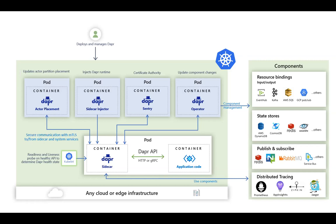To update root and issuer certs, you edit the Kubernetes secret with new certificates and then do a rollout restart of the deployment. These concepts — how it works and how to update the certificates — will be in the concepts section soon. Any questions on secure communications with MTLS between sidecars and system services?